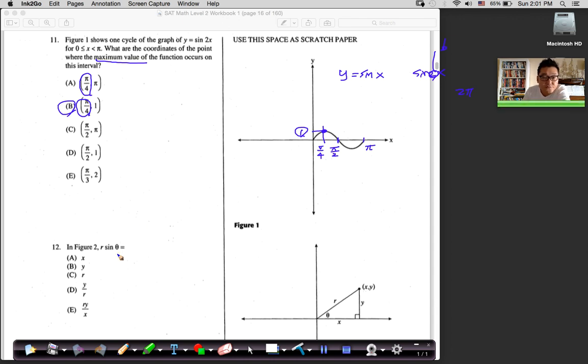Number 12, figure 2, R sine theta. Whoa, when we have R and theta involved, what topic is that? It is polar coordinate. If you didn't learn it, that's fine. I'll have a video of individual topics, so you can watch that. But polar coordinate involves R, the radius and the theta, the amount of angle that it rotates.